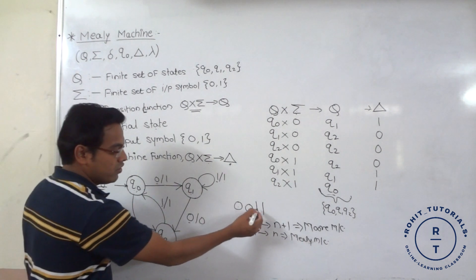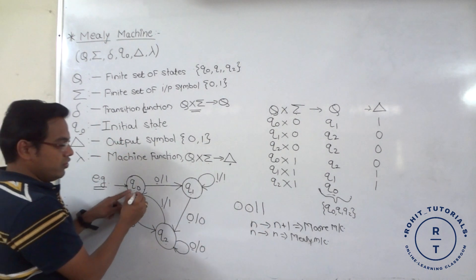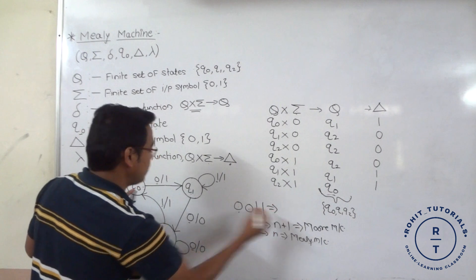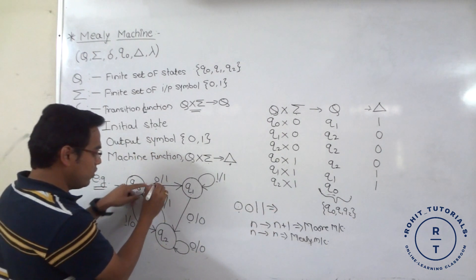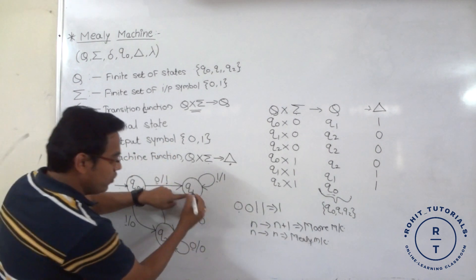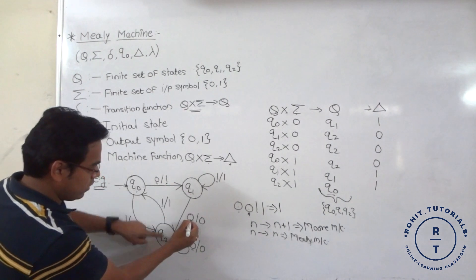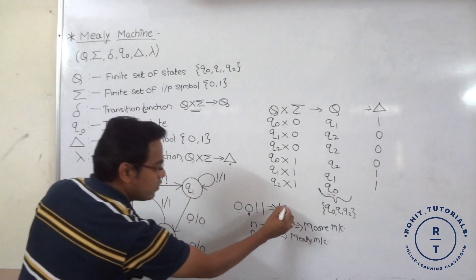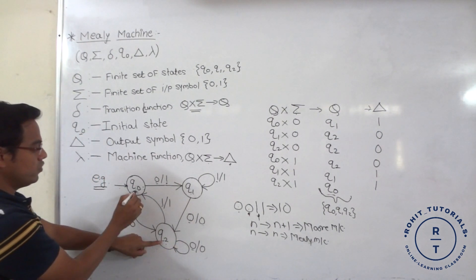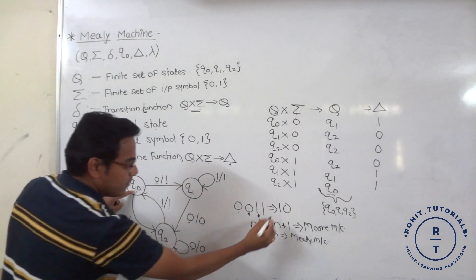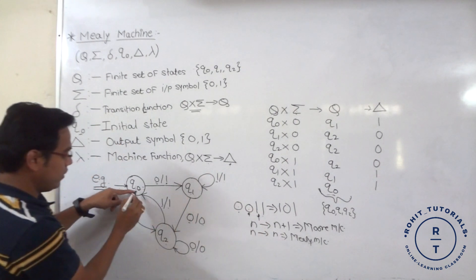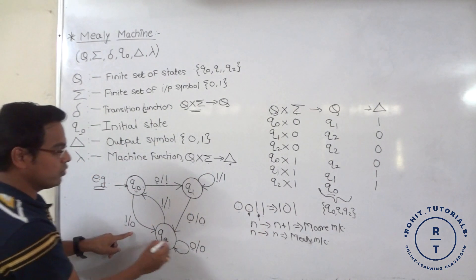Let me check 0011. Starting state: Q0, input 0 occurs, it goes to Q1 state, and output is 1. Q1, input 0 occurs, it goes to Q2, output is 0. At Q0, input 1 occurs, it goes to Q2, output is 0. So this is about basic things related to mille machine.